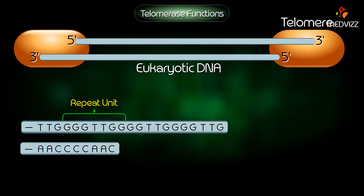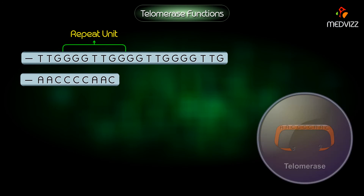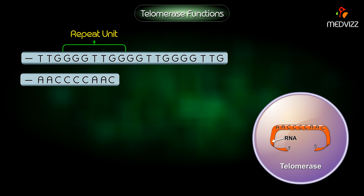The addition of telomeric repeat sequences by an enzyme complex referred to as telomerase assures that this shortening does not occur. Telomerase is a unique and interesting enzyme because, in addition to having DNA polymerase activity, it also contains an RNA sequence that provides a template for the synthesis of telomeric repeat DNA.